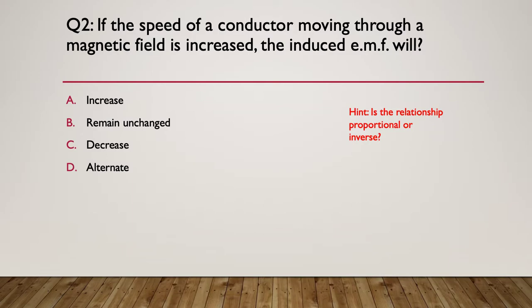Here's the hint: is the relationship proportional or inverse? Think about what happens as you change something — will it go up or down in response? The answer: if the speed of a conductor moving through a magnetic field is increased, the induced EMF will also increase. It is directly proportional — speed increases, voltage increases.